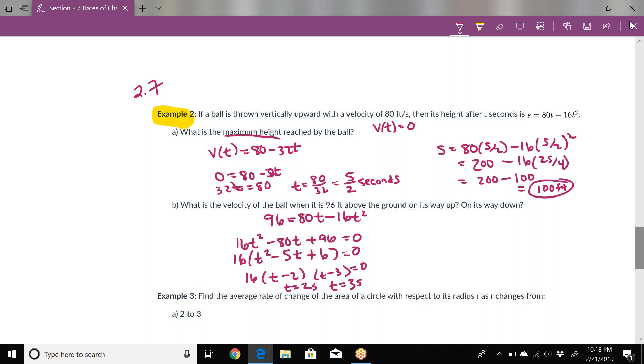One was at 2 seconds and one was at 3 seconds. To find the actual velocity for those values, we need to do v(2) and v(3).